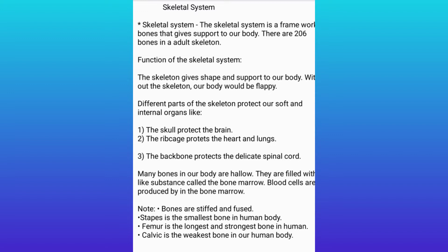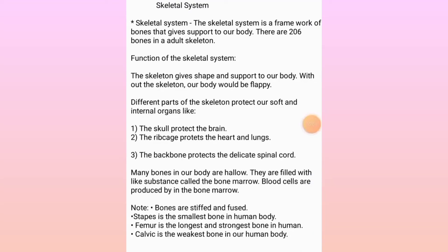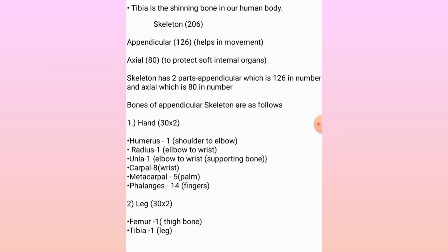Many bones in our body are hollow. They are filled with a jelly-like substance called bone marrow, where blood cells are produced. Note: the stapes is the smallest bone in the human body, the femur is the longest and strongest bone, the clavicle is the weakest bone, and the tibia is the shinbone.